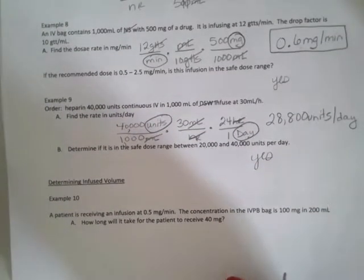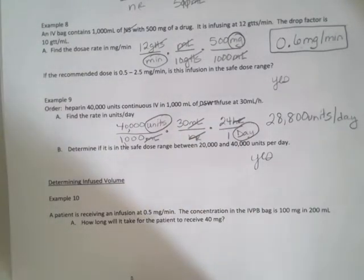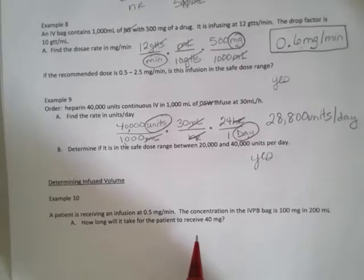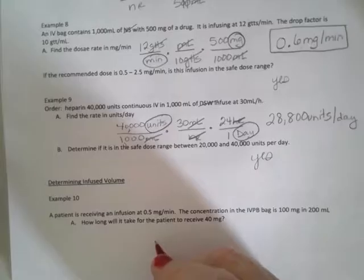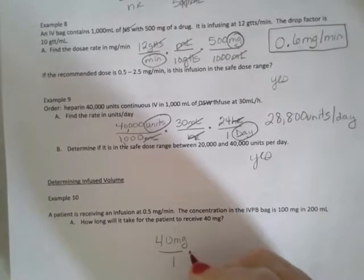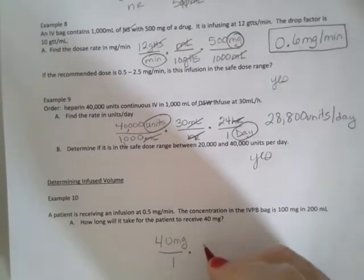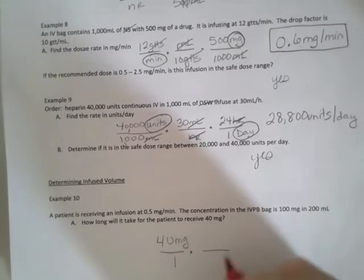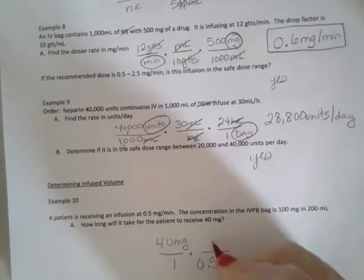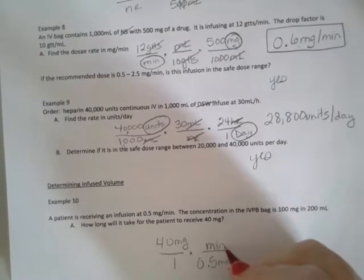In example 10, part A, a patient is receiving an infusion at 0.5 milligrams per minute. The concentration of the IV piggyback is 100 milligrams in 200 milliliters. How long will it take for the patient to get 40 milligrams? So 40 milligrams times, I'm going to put my 0.5 milligrams in the denominator so my milligrams will cancel. That was per minute, so my minute goes in the numerator.